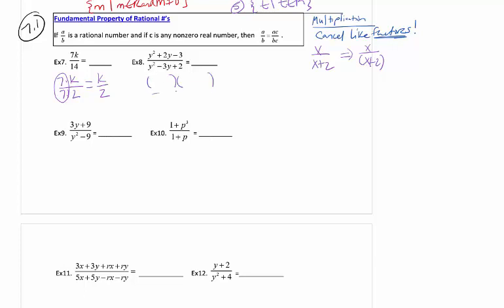In problem 8, numerator and denominator both have leading coefficients of 1, making them more straightforward. We have y times y, and we know there must be a plus and a minus. The only option for 3 is 3 times 1. To get a positive 2y in the middle, it must be positive 3 and negative 1. You can still use the AC method, but show your work on the test.